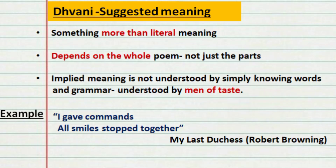Implied meaning is not understood by simply knowing words and grammar — it is only understood by men of taste. For example, consider lines from 'My Last Duchess' written by Robert Browning. One of the characters, the Duke, is giving orders to kill the Duchess, and that is what the poet means with the line 'all smiles stopped together when the Duke gave the command.' The suggested meaning is something more than the literal meaning, depends on the whole poem, and can be understood only by men of taste. This is what we call Dhvani.